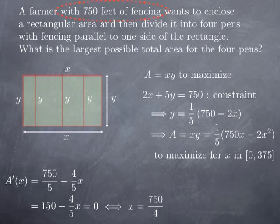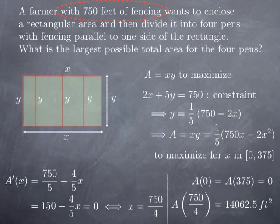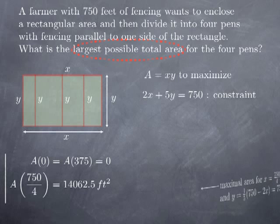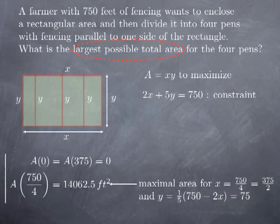Using the closed interval method, the maximum of A on [0, 375] occurs either at an endpoint or at the critical point. At the endpoints, the area is 0 because one of the two dimensions is 0. At the critical value x = 375/2, I get a maximal area of 14,062.5 square feet. We need x to be 375/2 feet and y to be 75 feet to obtain this maximal area.